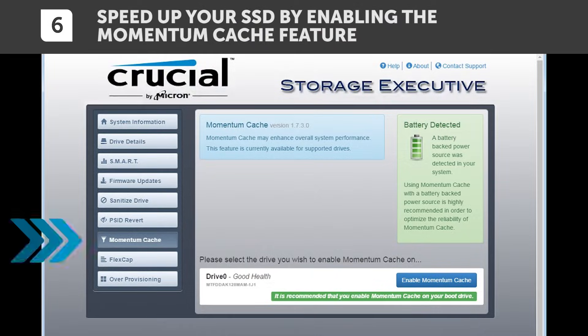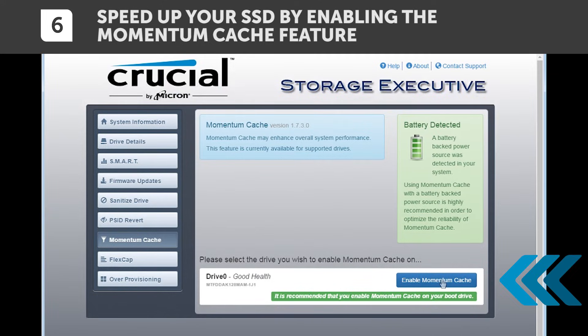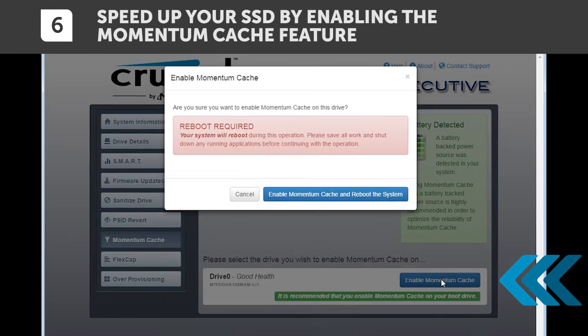Now let's click on the Momentum Cache tab. This is a function that can help your SSD run up to 10 times faster by enabling it. There are two more things that I'd like to point out.